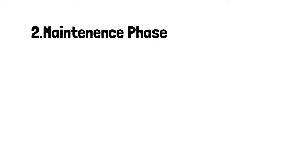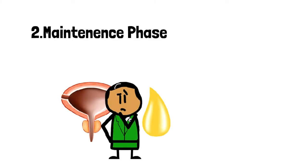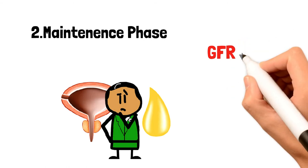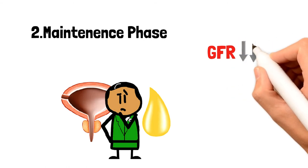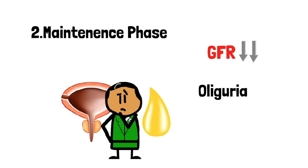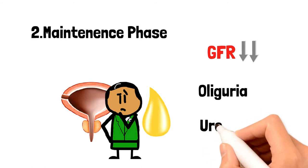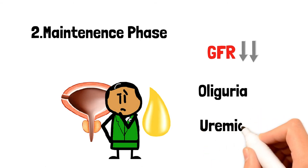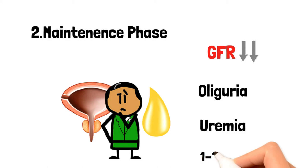Number two: the maintenance phase. This phase is characterized by stabilization of GFR at an extremely low level, oliguria — the passing of less urine than normal — and uremia, a complication that happens when urea builds up in the body. This phase typically lasts 1 to 3 weeks.